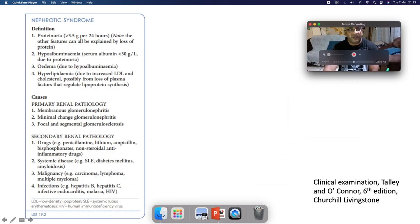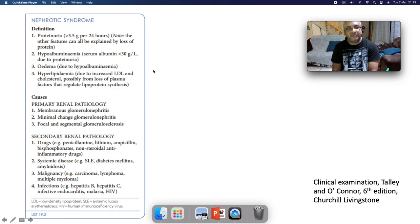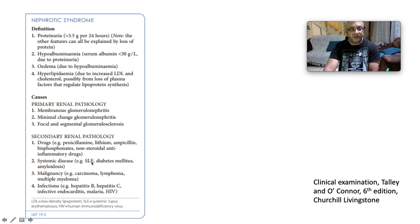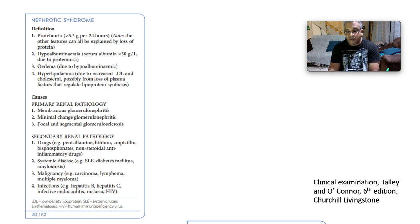Nephrotic syndrome is defined by proteinuria above 3.5 grams per 24 hours, and all other features can be explained by that protein loss: hypoalbuminaemia with serum albumin below 30 g/L, oedema from hypoalbuminaemia, and hyperlipidaemia due to increased LDL cholesterol from loss of plasma factors regulating lipoprotein synthesis. Secondary causes include drugs, systemic disease such as SLE or diabetes, amyloidosis, malignancies such as myeloma or lymphoma, and infections including hepatitis B, hepatitis C, malaria, and HIV. Primary causes include membranous glomerulonephritis, minimal change glomerulonephritis, and focal and segmental glomerulosclerosis.